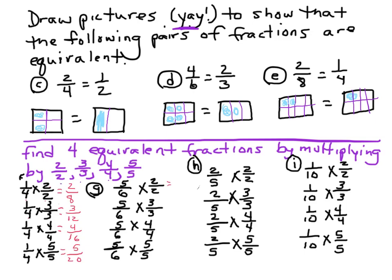Again, work this with me. Five times two is ten, six times two is twelve — so five sixths is ten twelfths. Five times three is fifteen, six times three is eighteen. Those of you who can do this faster, go for it, but if you need me to walk you through it, that's what I'm here for. Five times four is twenty, six times four is twenty-four — these are all equivalent fractions. Five times five is twenty-five, six times five is thirty.